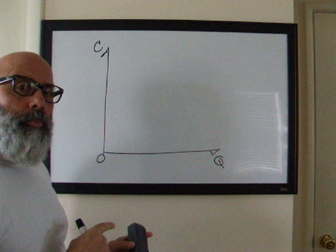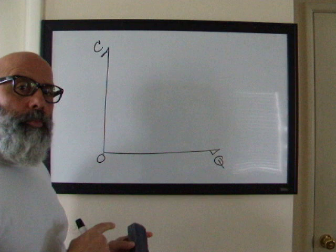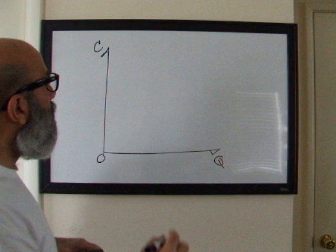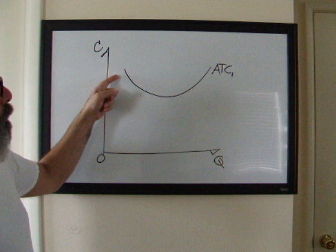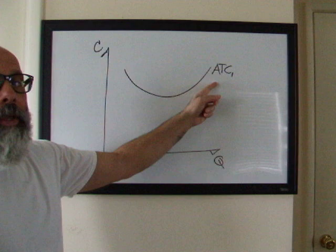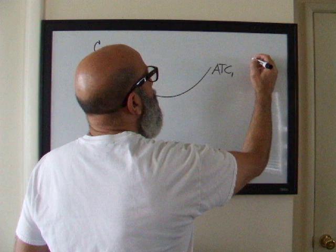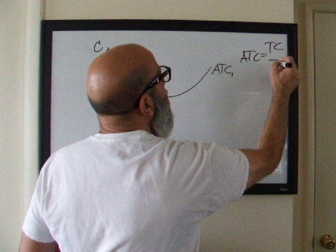We're going to leave marginal cost out of this presentation, and we want to focus on average total cost and average variable cost. So average total cost, it's an up parabola. We're just drawing it based on the concept. There's no data here. We know that when marginal costs are falling, they pull the average down, and when marginal costs are rising, they pull the average up. So this is the shape of average total cost. Remember, average total cost is total cost divided by quantity.